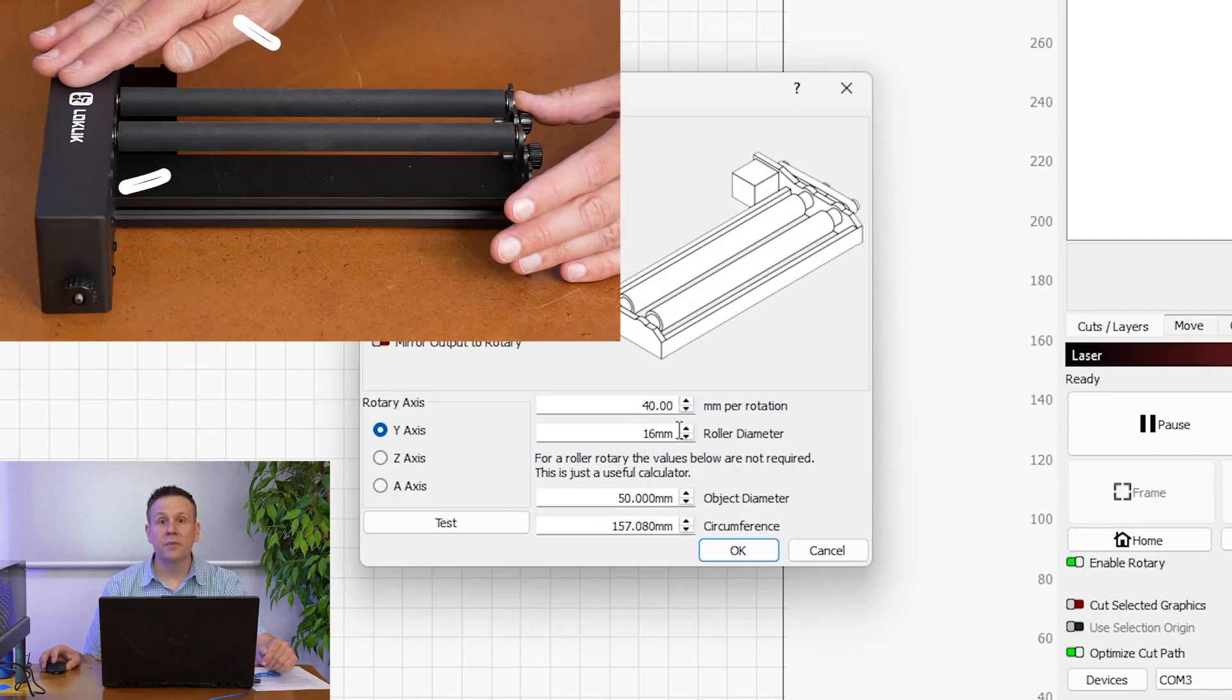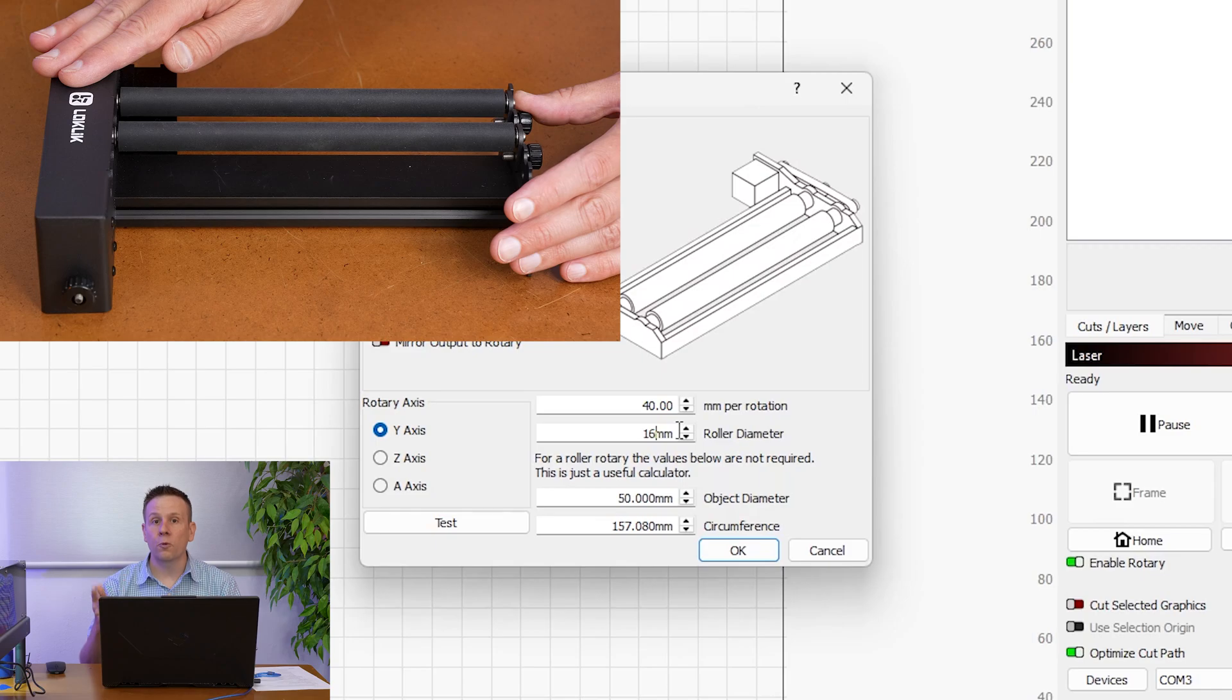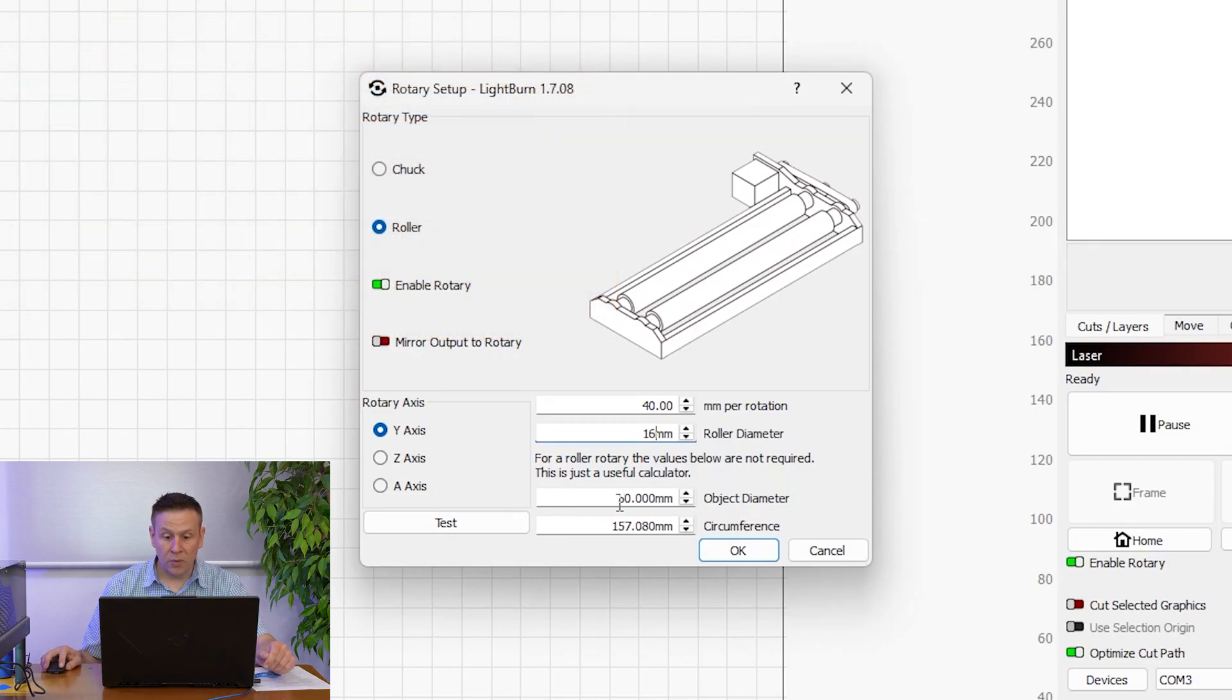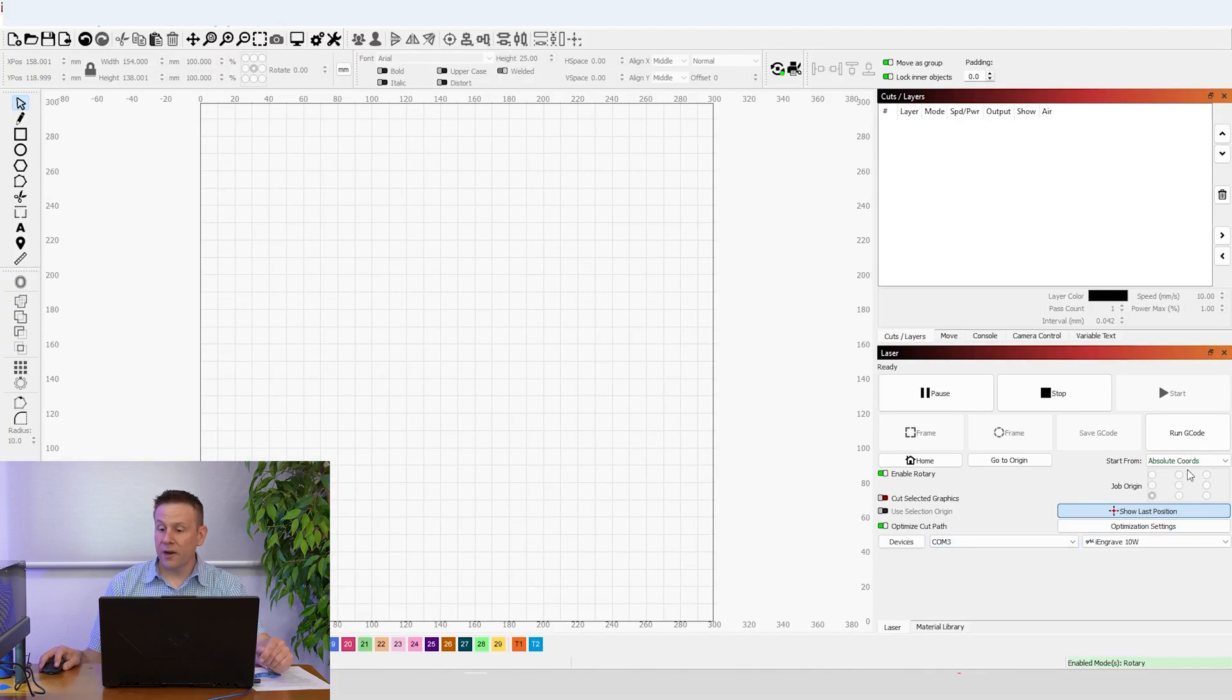That 16 millimeters is actually the diameter of those rubber covered drive rollers on the rotary attachment itself. Down below here, there's some object diameter and circumference. And as we can read here, this is not anything that the program uses. It's just a useful calculator. The other thing that I want to make sure that I have selected is the start from I want to change that from whatever it is, I just want to make sure that it's set to current position. Now, according to the instructions, I'm all set to start creating projects on the rotary unit. But I want to double check those settings that we just put in.